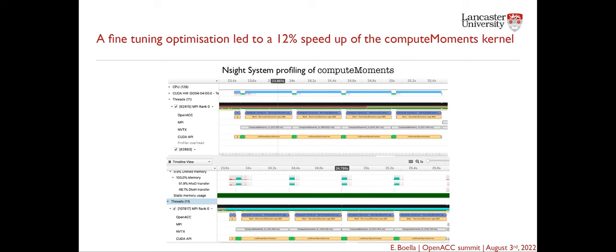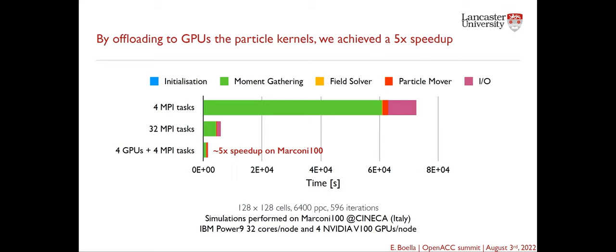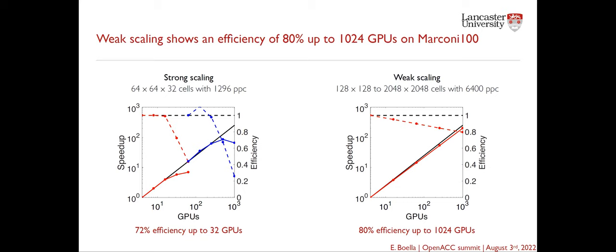After all these modifications, we re-ran the same simulation on GPU — this time using four GPUs with four MPI tasks, one task per GPU — and compared with CPU results on Marconi 100 at Cineca. We achieved a 5x speedup compared to a full node of 32 MPI tasks on Marconi 100. Compared to just four MPI tasks, the speedup is about 50x. In strong scaling tests, we achieved 72% efficiency up to 32 GPUs across eight nodes.